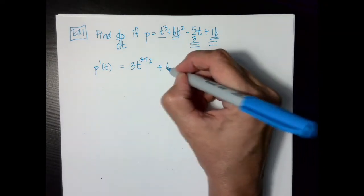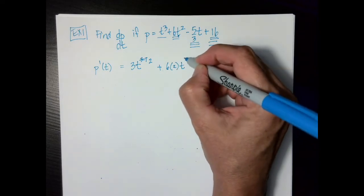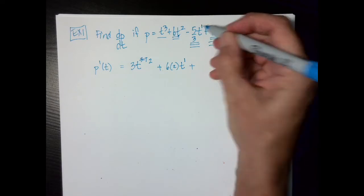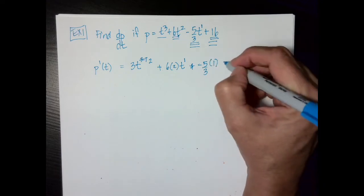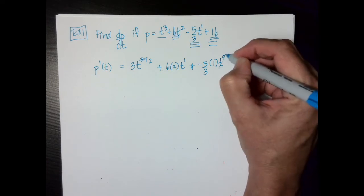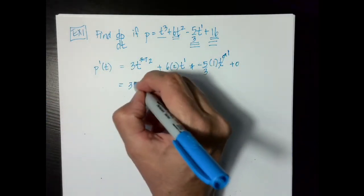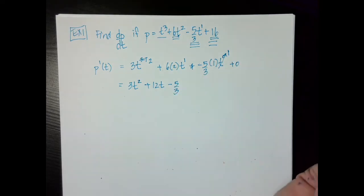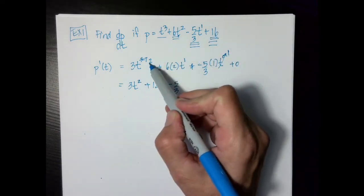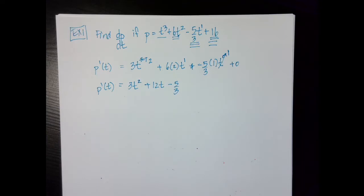On the next term, the constant 6 stays, the 2 goes out front, and 2 minus 1 is 1, giving me 6 times 2 times t to the 1, which is 12t. For the next term, the 1 comes out front and t to the 1 minus 1 is t to the zero, which is 1, so I get minus five-thirds. The derivative of the constant 16 is zero. Cleaned up: p prime of t equals 3t squared plus 12t minus five-thirds. So much faster than the limit definition of a derivative.